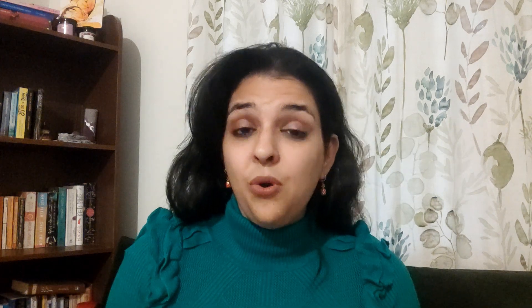...is the post-position 'ko' with the subject. That 'ko' is used with abstract nouns. An abstract noun is something not tangible, like love, or freedom, or pain, etc. Let me give you some examples of abstract nouns.